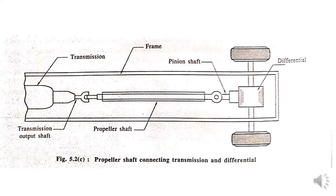From the transmission box we have the output shaft; from that, a universal joint is there; from the universal joint through the sliding joint it goes to the propeller shaft; from the propeller shaft, a sliding joint goes to the differential — in the differential we call it the pinion shaft; from the pinion shaft it goes to the rear axle; rear axle to the wheels. The main function of differential is to transmit power at a right angle as well as to give proper speed to both wheels whenever turning is provided.